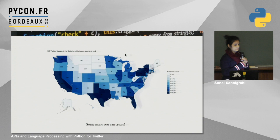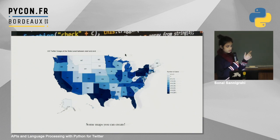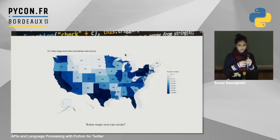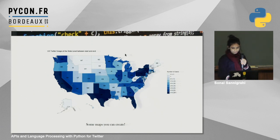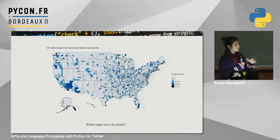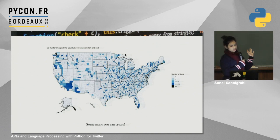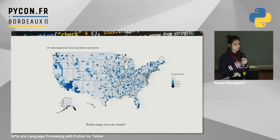For example, here is a map showing state-level Twitter concentration. This graph shows Twitter usage in the United States between two arbitrary dates, with user counts ranging from 2 to 267. You can also zoom in to look at the county level — I streamed about 6,000 tweets, so it's not very dense, but with larger datasets of a million or two million tweets, you get a very complete graph.